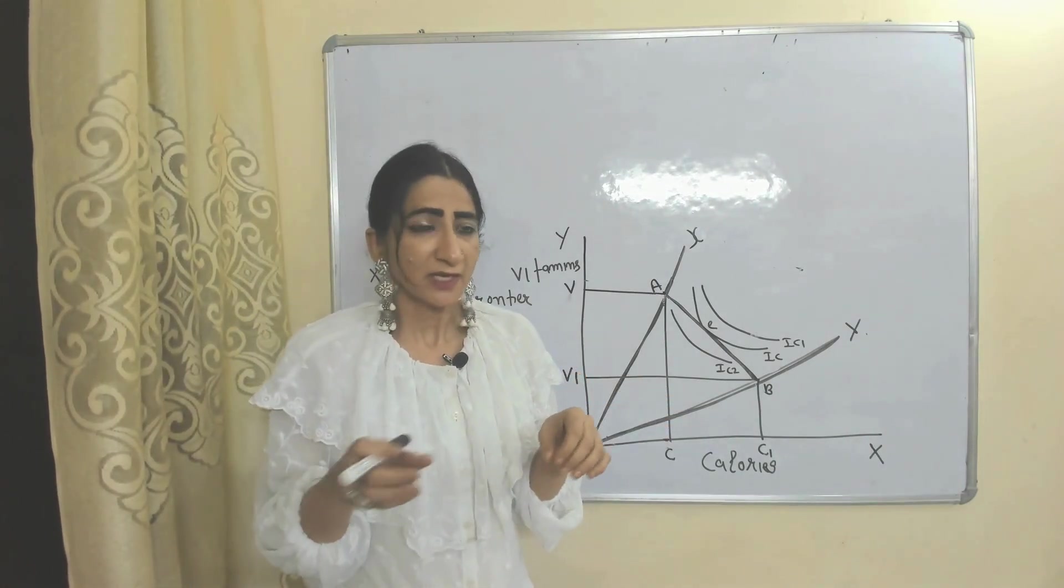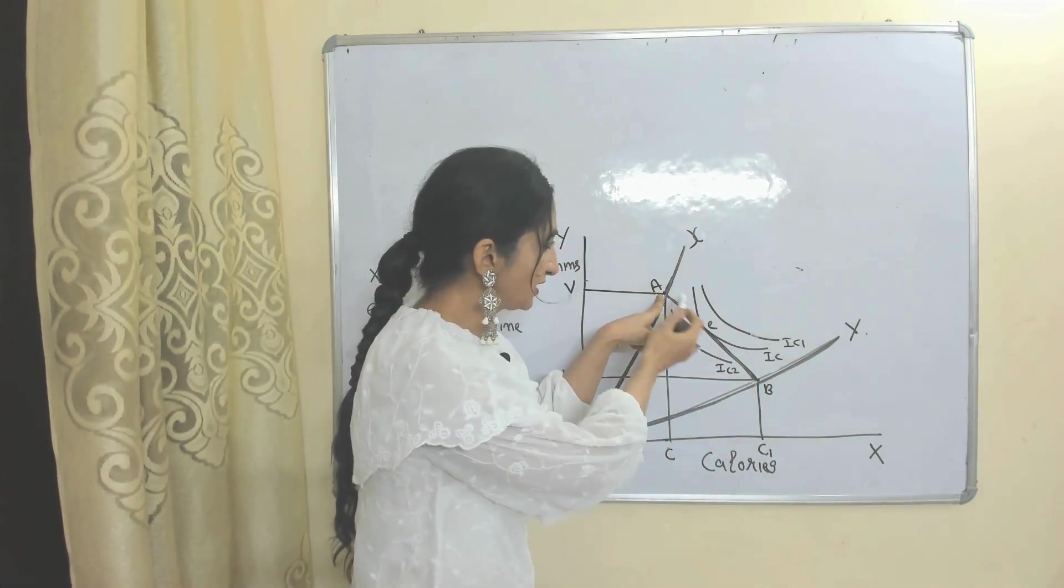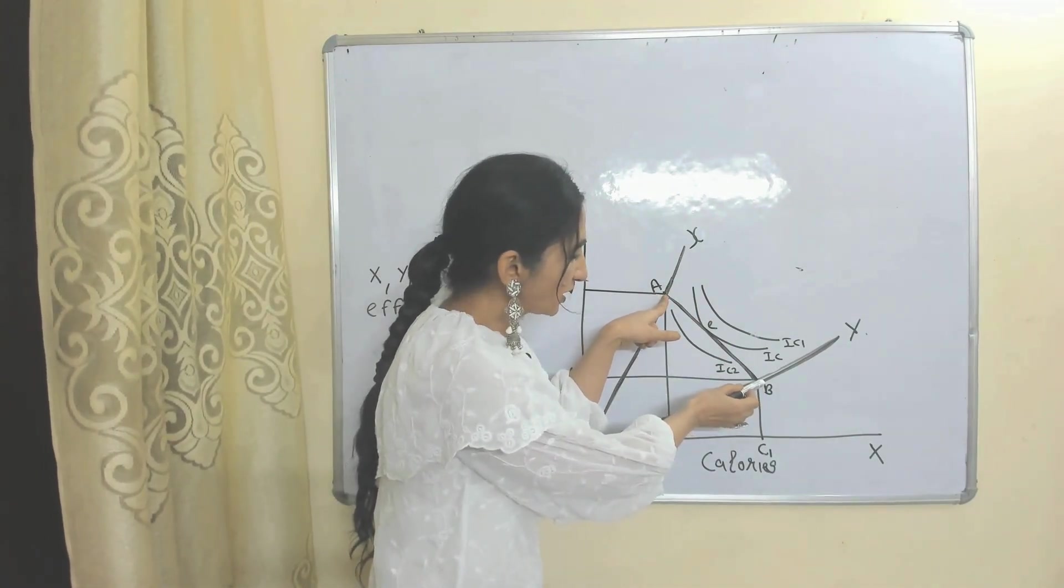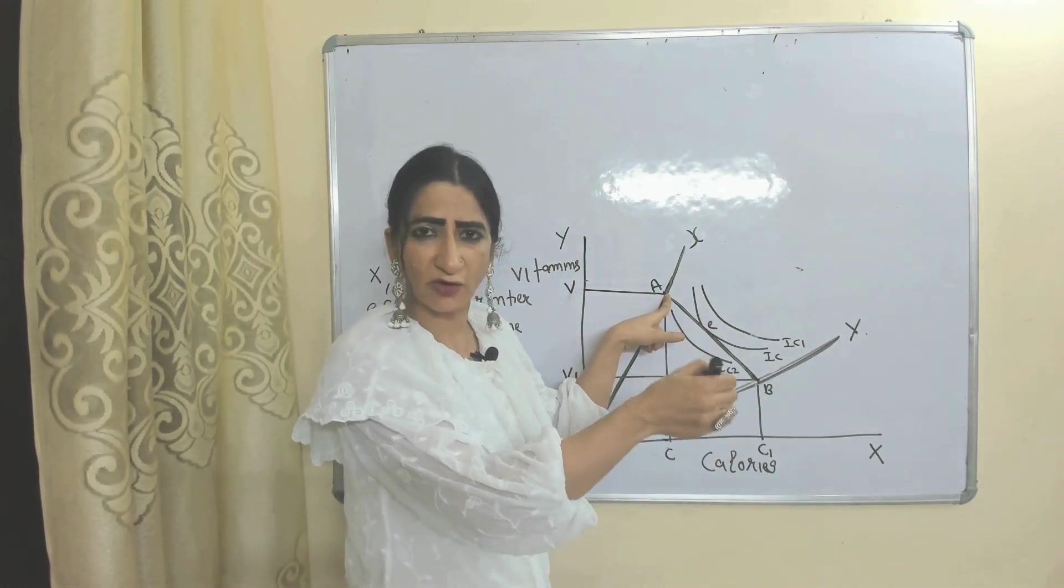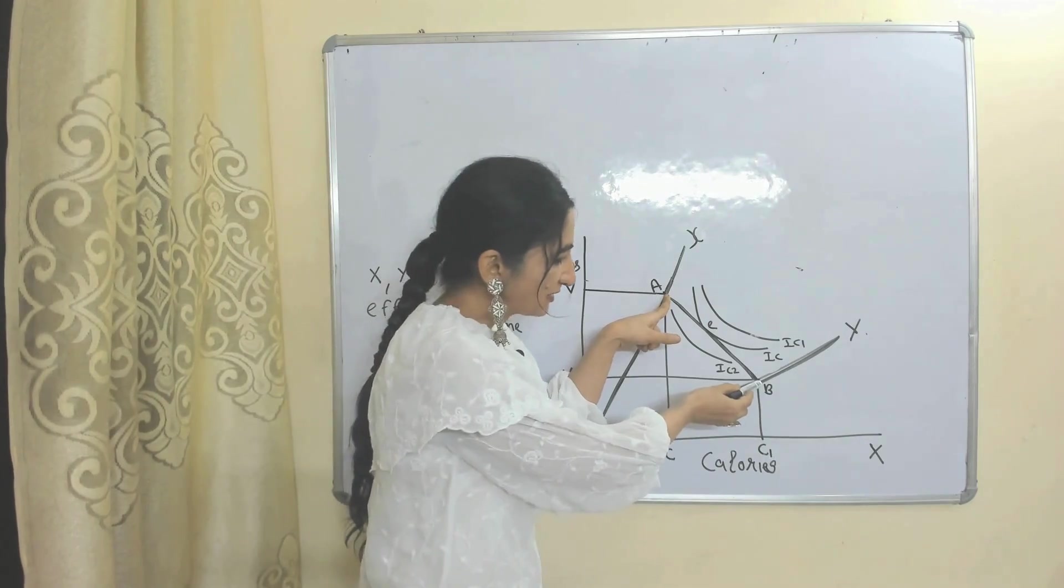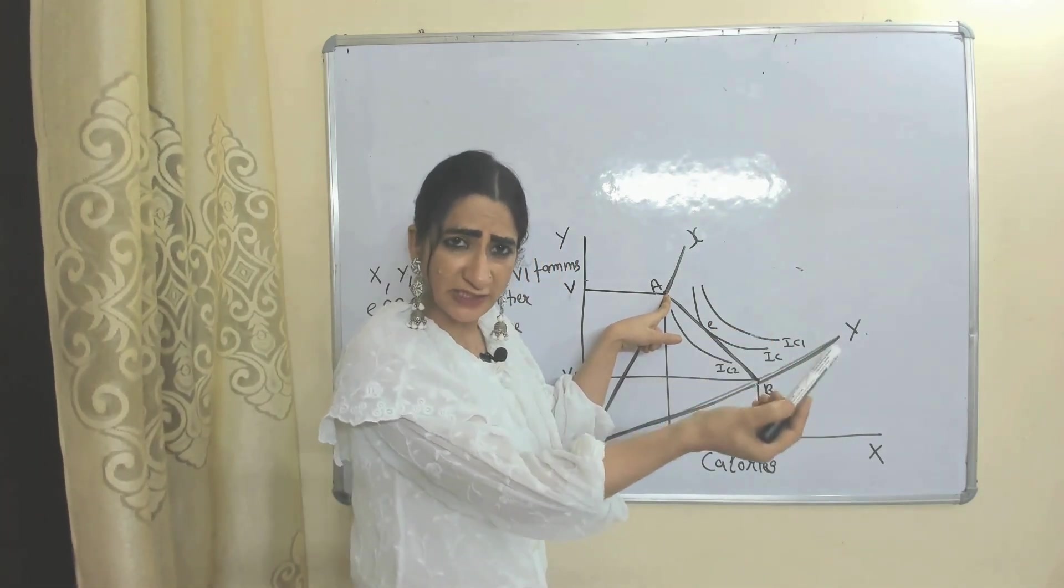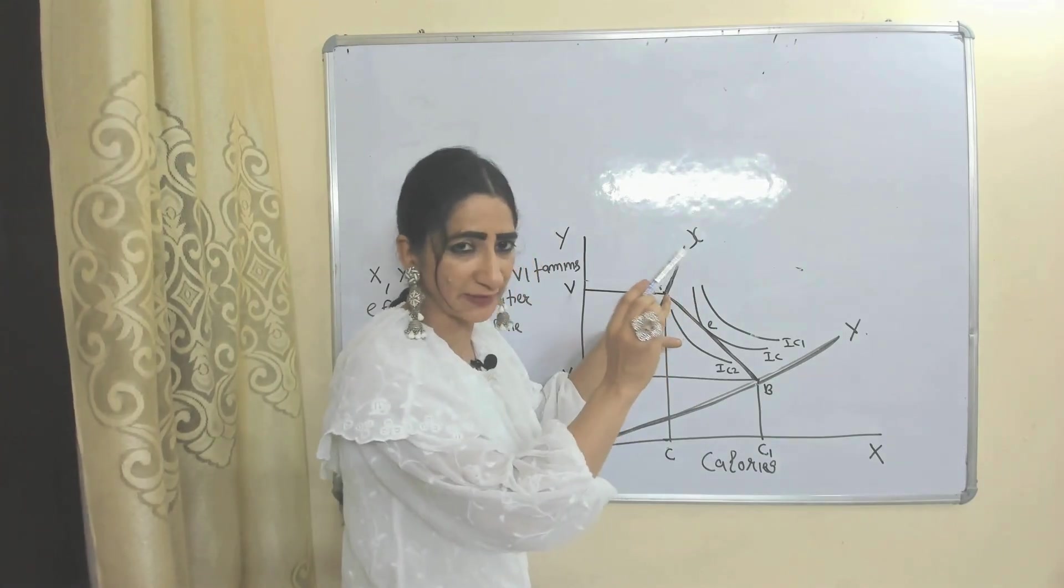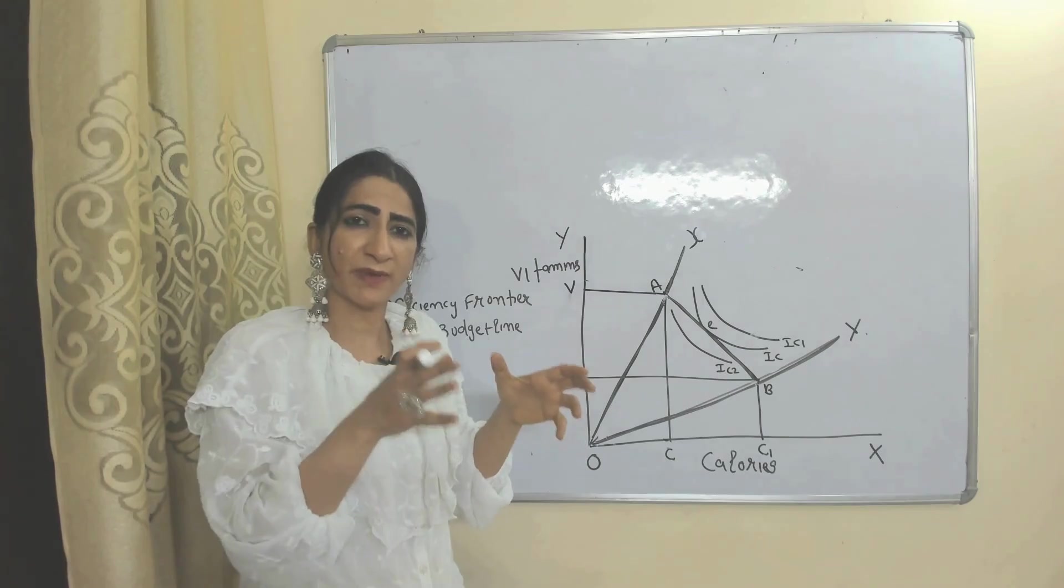Suppose the consumer decided to buy both foods X and Y. This line which lies between X and Y is called the budget line, or the efficiency frontier of the consumer. This AB line represents the efficiency frontier if the consumer buys both products. The efficiency frontier tells us the maximum amount of attributes like vitamins and calories the consumer can consume with given income and prices of goods.